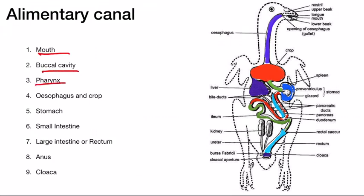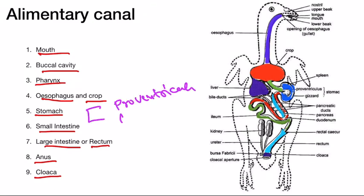The alimentary canal comprises of many anatomical structures: mouth, buccal cavity, pharynx, esophagus and crop, stomach, small intestine, large intestine or rectum, anus, and cloaca. The stomach has two parts called the proventriculus and the gizzard. In other vertebrates the stomach is divided into cardiac stomach and pyloric stomach, but in birds we see the proventriculus and gizzard. The small intestine has two parts: the duodenum and ileum.